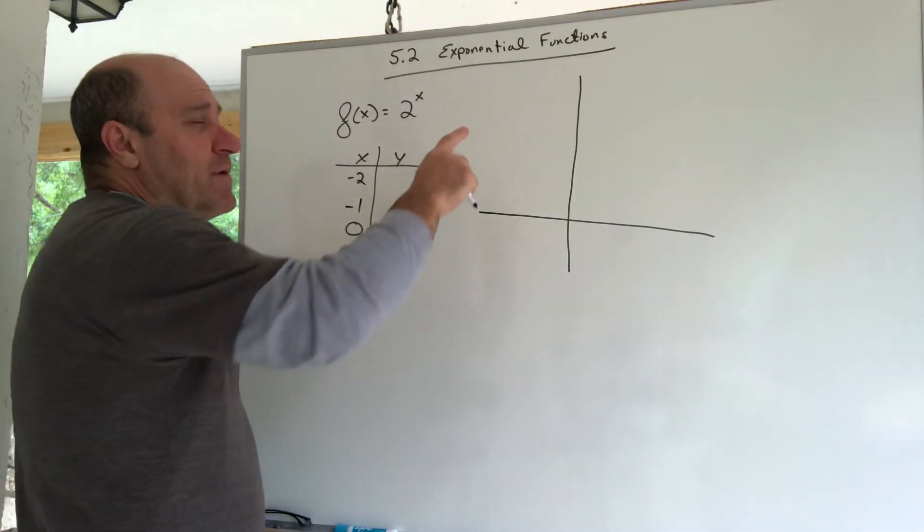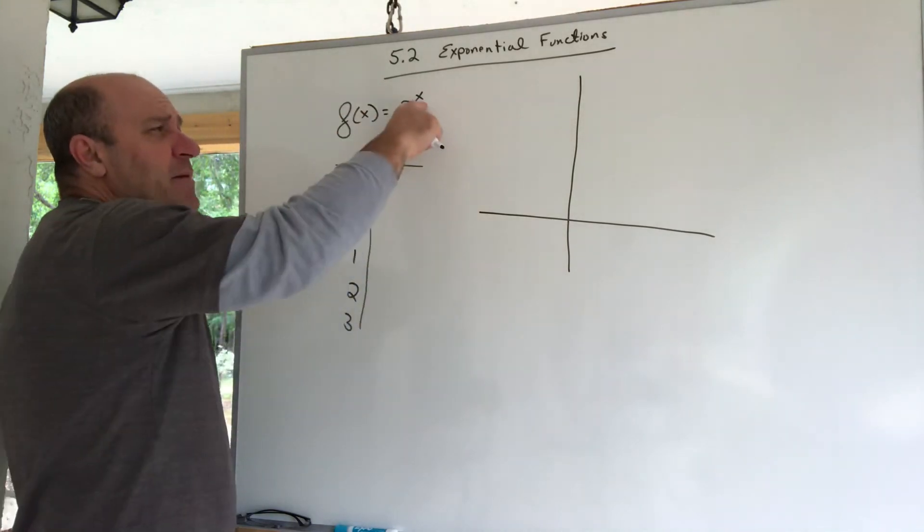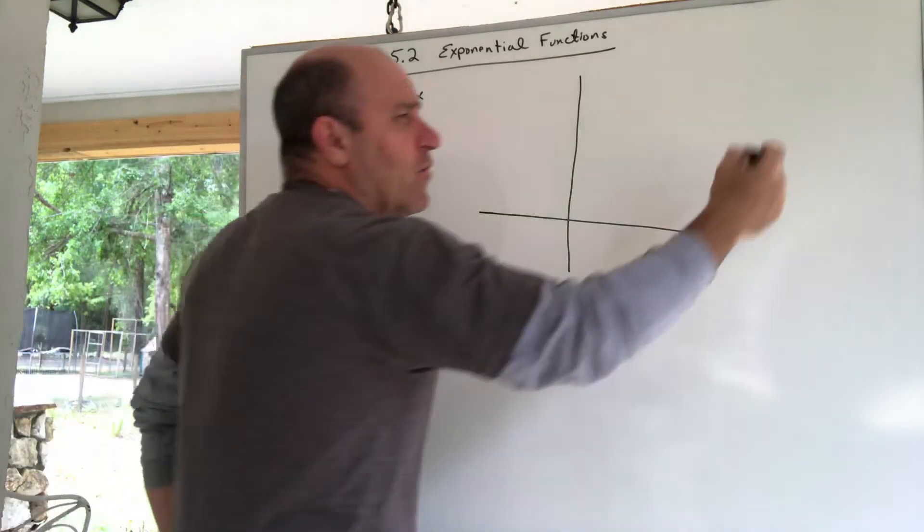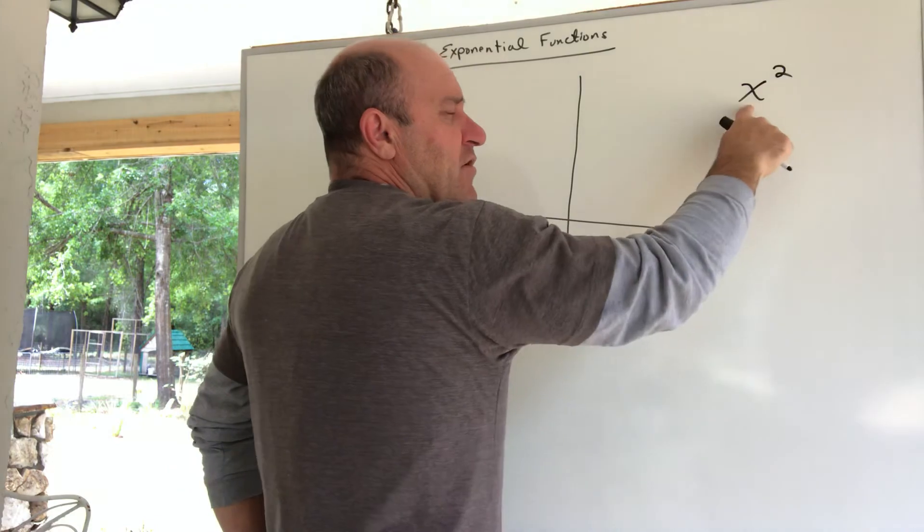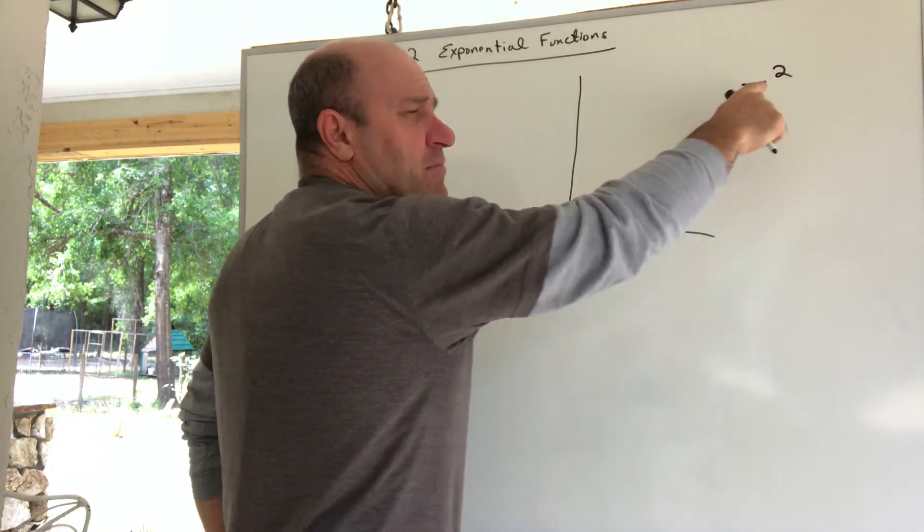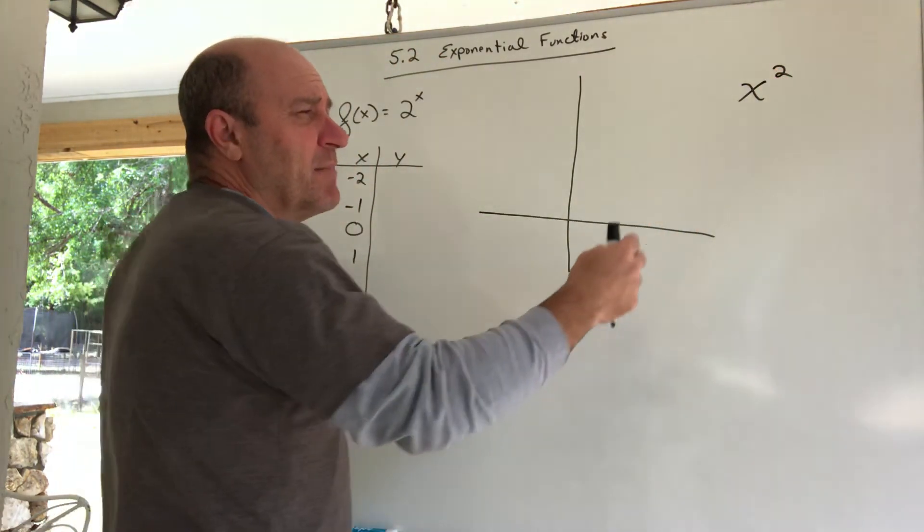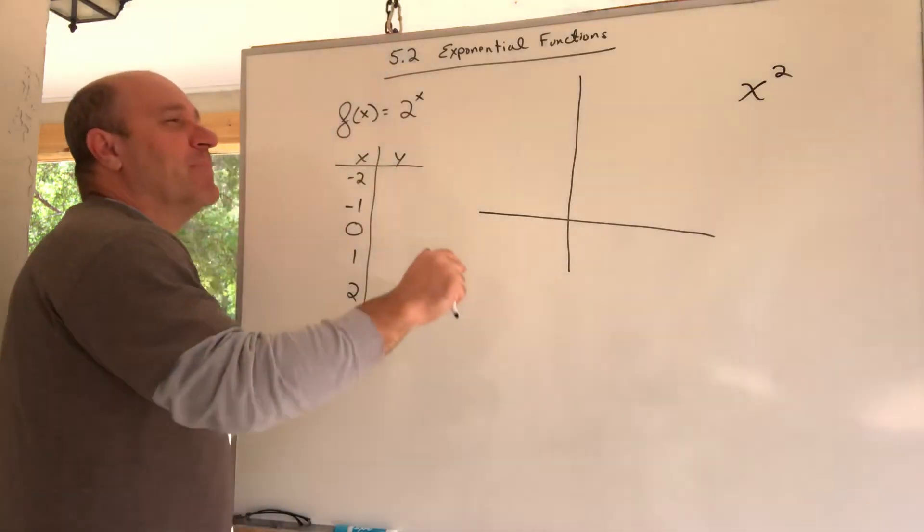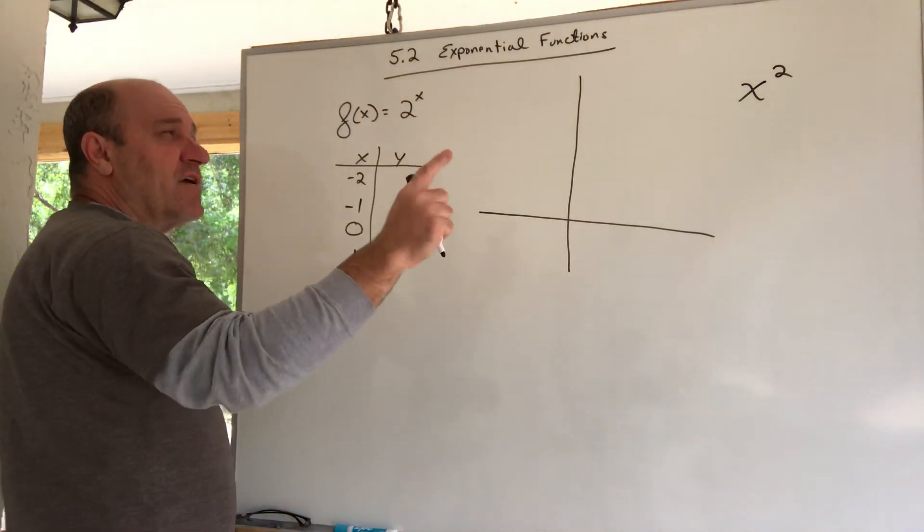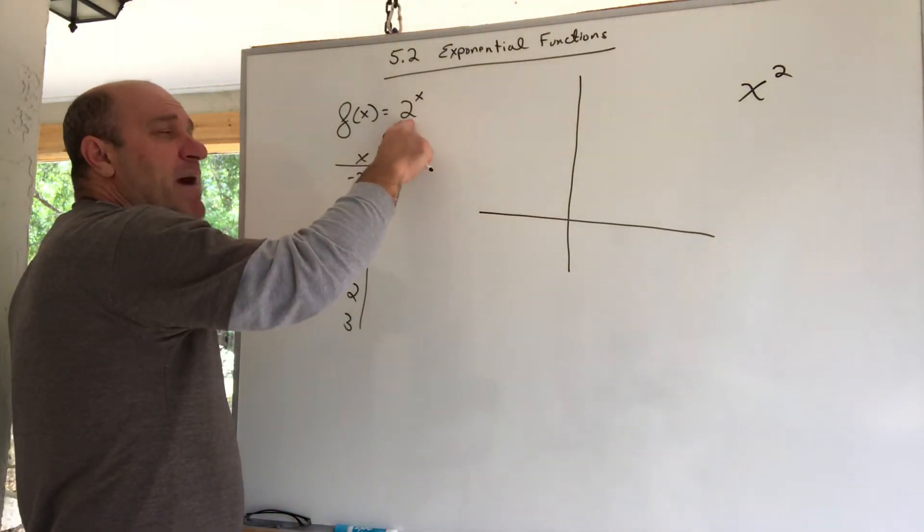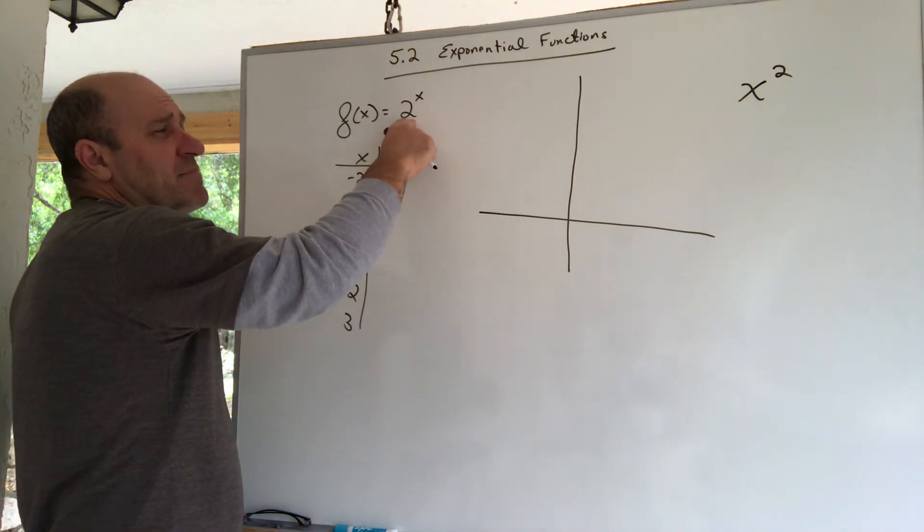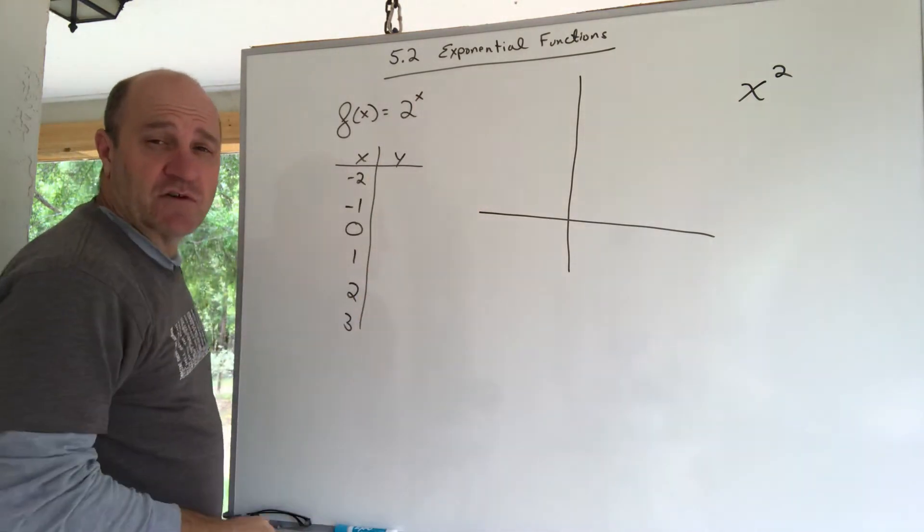What makes it an exponential function is the variable now is up in the exponent. We've dealt with a variable in the base and the exponent could be squared or cubed, but that's different. When the variable is up in the exponent and the base is a number, we refer to this as the base, then it's an exponential function.